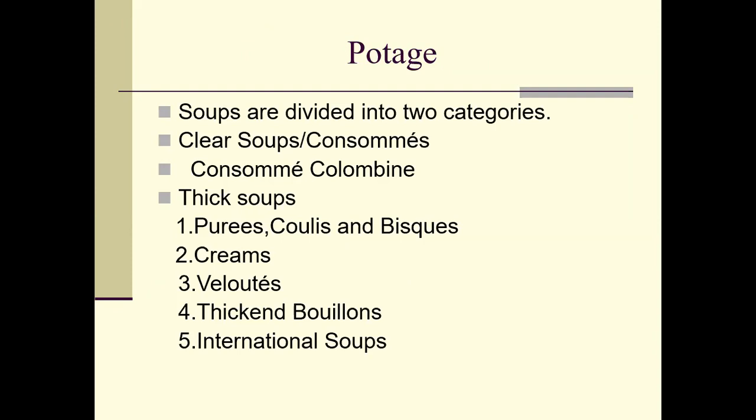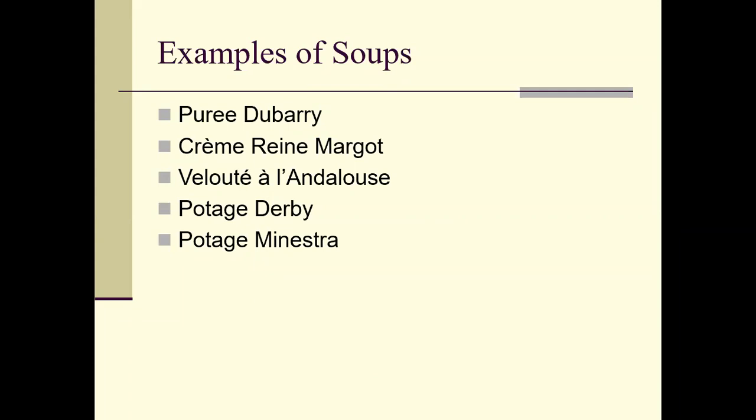For your potage course, soups are divided into two categories: clear soups like consommés — for example, consommé Columbine — and thick soups, which could consist of purées, coulis, or bisques. You also have cream soups, velouté soups, thickened bouillon soups, and international soups. So you have a wide array of different soups, and you could have multiple soup courses within your menu sequence if you want. Examples include purée du Barry, crème Reine Margot, velouté, and Minestra.